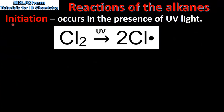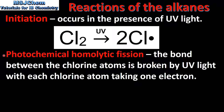The first step in the reaction is initiation, which occurs in the presence of UV light. In this reaction the bond between two chlorine atoms is broken in the presence of UV light to produce two chlorine free radicals. This is known as photochemical homolytic fission, in which the bond between the chlorine atoms is broken by UV light with each chlorine atom taking one electron.